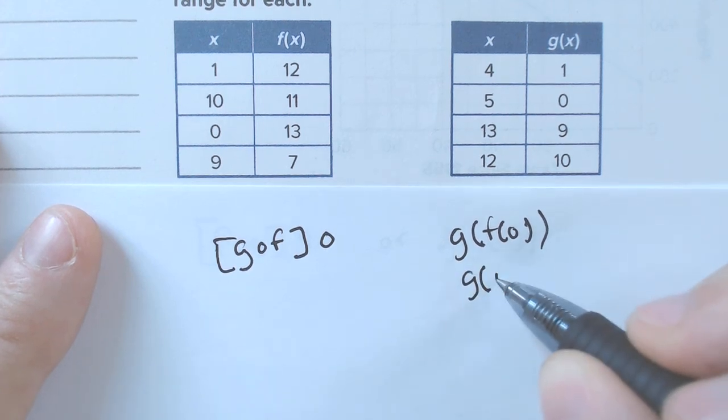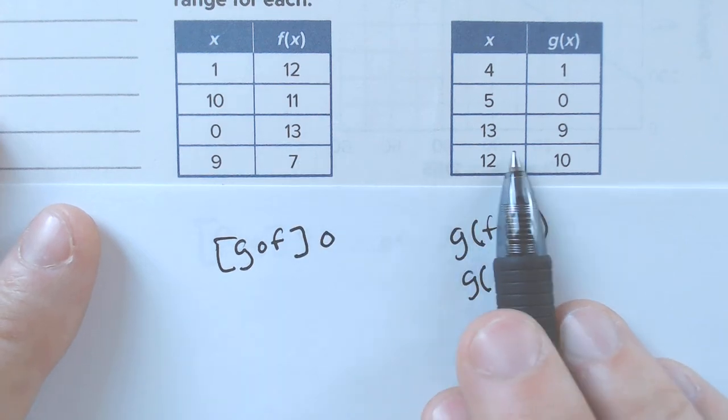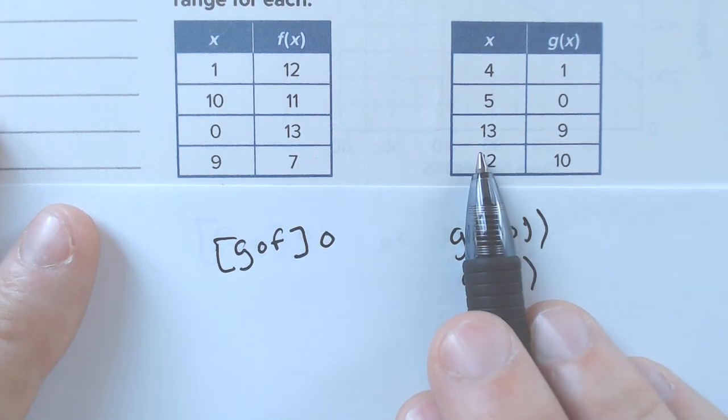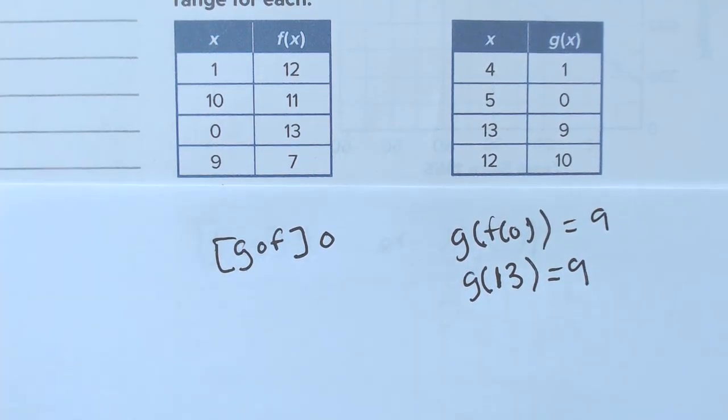So, we're really doing g of 13, and I look at the g of x function, I find 13, and if I plugged in 13, I would get 9. And our final answer would be 9.